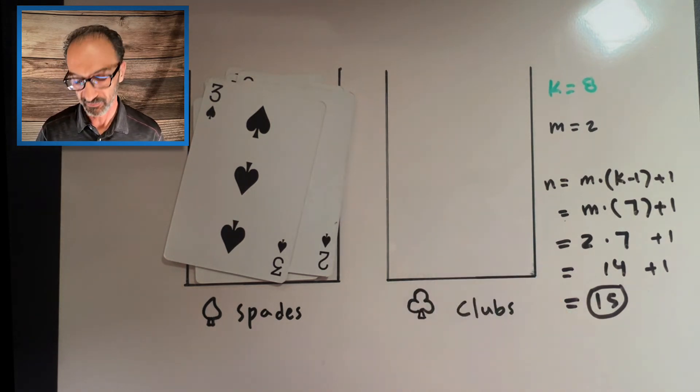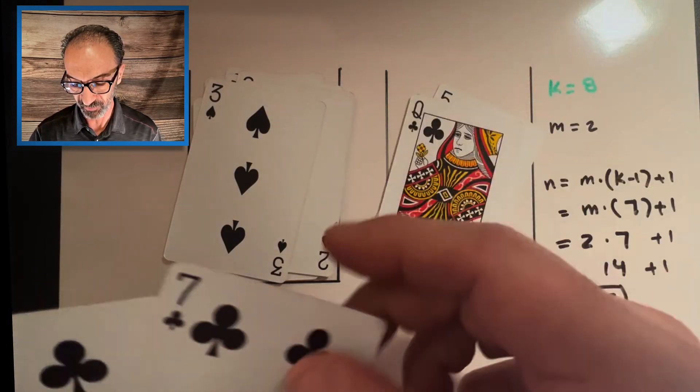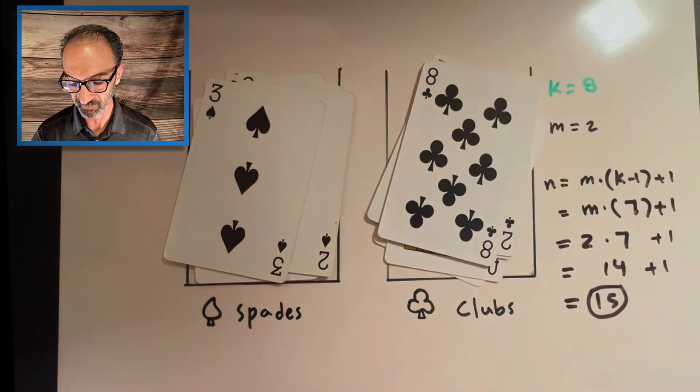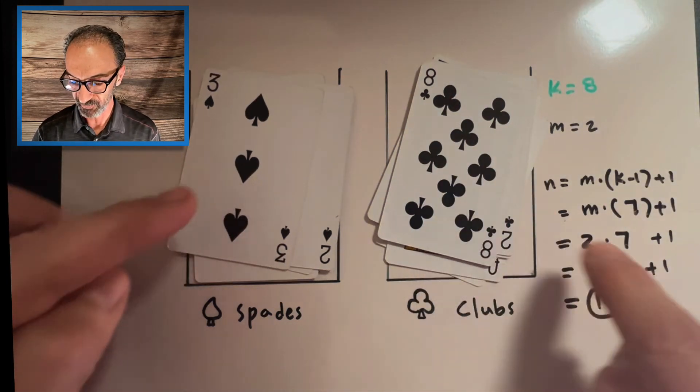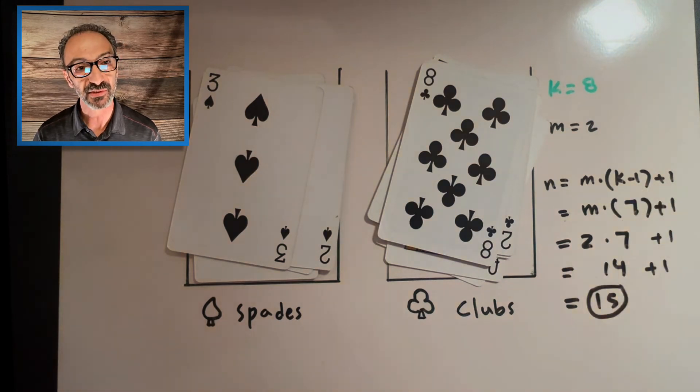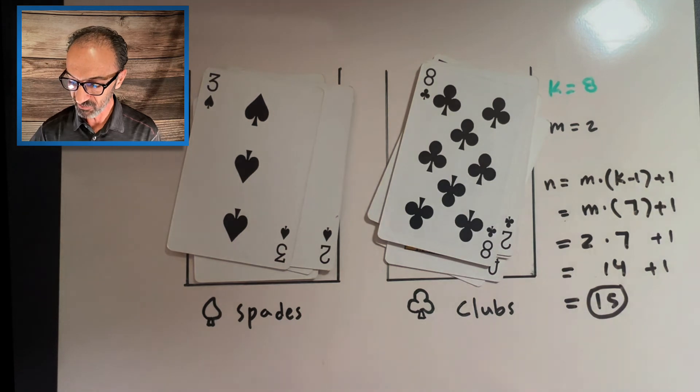Same thing here: one, two, three, four, five, six, seven. That is seven times two.